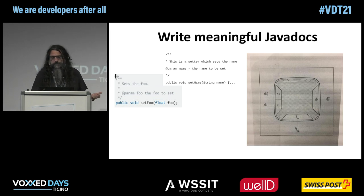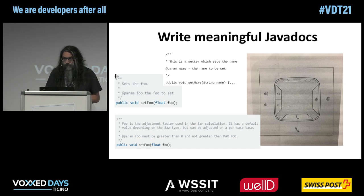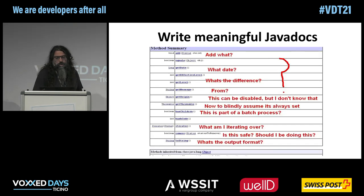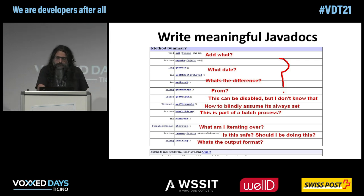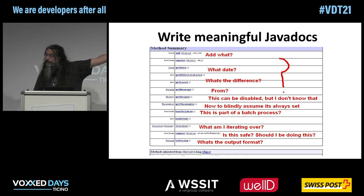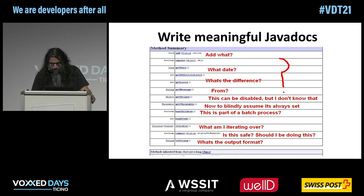In reality, even for a simple setter method, you can say a lot. You can say which are the allowed ranges, what happens if you provide an out-of-range value, and very importantly, whether that thing is thread-safe or not. You can provide a lot of information. If you don't, you leave your API user with a lot of open question marks — what does this method do, what is this data, what's the difference between getEffectiveLevel and that other level.